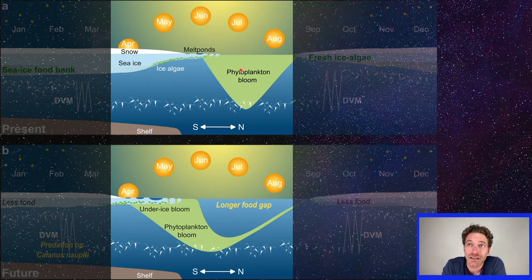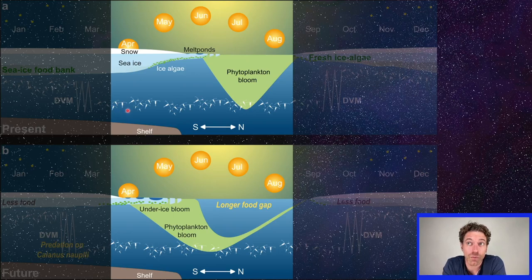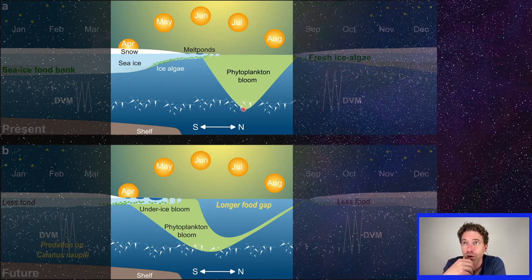it extends to the depths that the zooplankton, these copepods are residing at, because they're hiding from the surface. And basically, they wait until what looks like around July to be able to feed on these phytoplankton, these plants in the water.